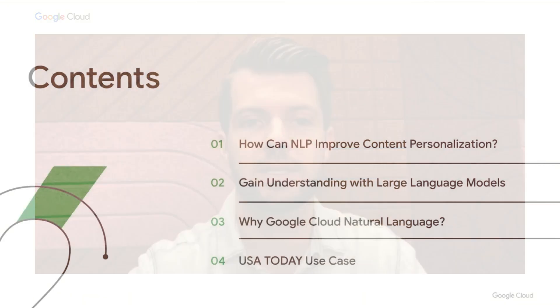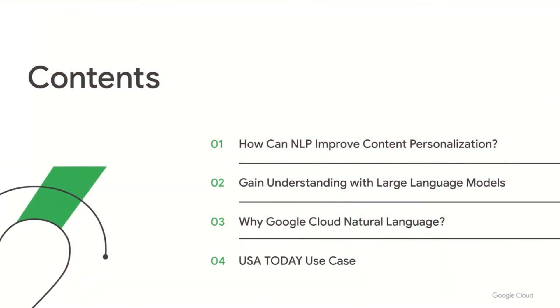Today, I'll be talking about how to maximize content relevance with large language models. First, I'm going to cover how natural language processing can improve content personalization and filtering. I'll talk about how we can gain understanding with a new era of language models. Then we'll talk about Google's natural language AI. And finally, we'll jump into some real industry applications and use cases, and we'll hear from Eric about how Google's natural language AI is used across the USA Today network newsrooms.